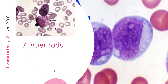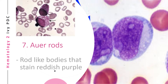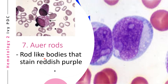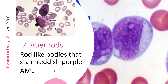Auer rods are bodies that may be seen in malignant myeloproliferative disease. These are rod-like bodies that stain reddish-purple. Multiple Auer rods may be seen, and they may also be seen in acute myelocytic leukemia.